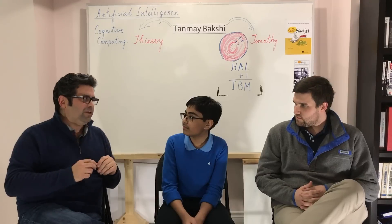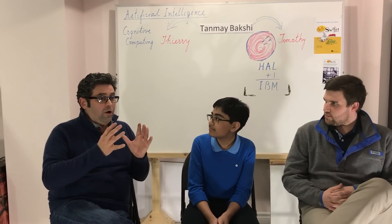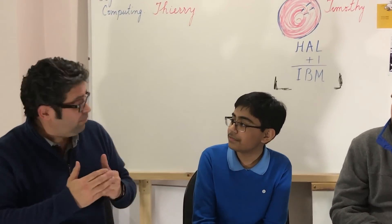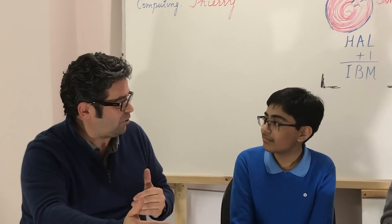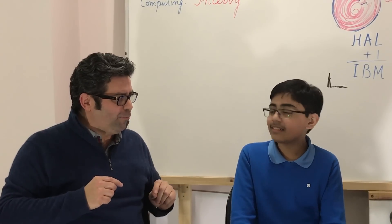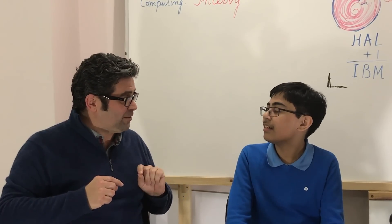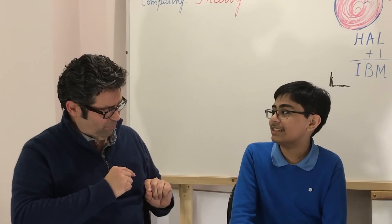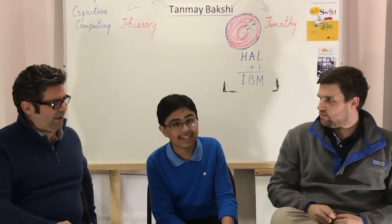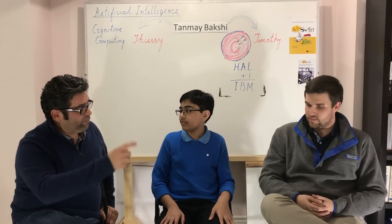A key distinction: deterministic computing means I've already designed a workflow with a designed outcome — it may change based on variables, but I've designed it. A learning system is different. A learning system says there are variables that are unknown — can I learn from the unexpected? That's a learning system. Computing that's much smarter than deterministic work, performed with prior knowledge: give me a new variable, let me learn, let me augment my decision capabilities.